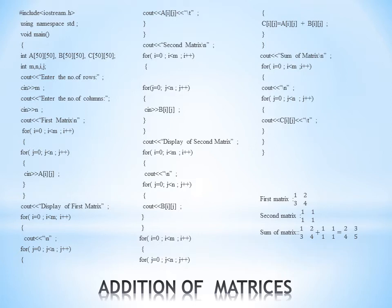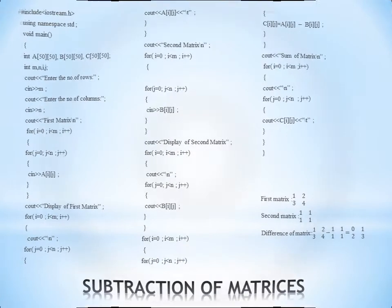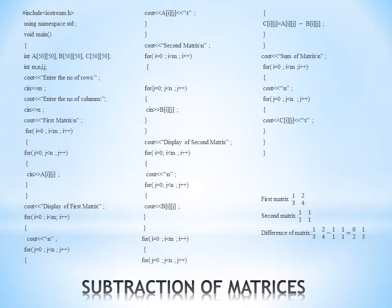We add them together and get the result: 2, 3, 4, and 5. We then print the sum matrix, which is 2, 3, 4, and 5. Next is subtraction of a matrix — it is just a slight difference compared to matrix addition. All you have to change is C[i][j] = A[i][j] - B[i][j]; the plus sign changes to minus. The rest of the program is the same.